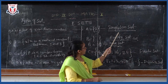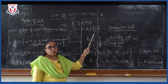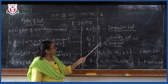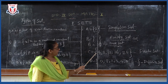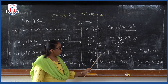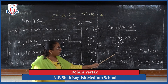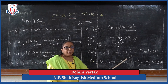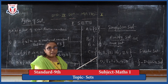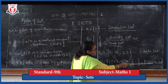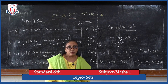Now observe set C and D. C is a definite set with definite numbers and is called a finite set, while D is an infinite set. So there are four types of sets: singleton set, which consists of only one element; null set or empty set, which has no element; finite set, where only certain numbers can be counted; and infinite set, where we cannot count the elements.